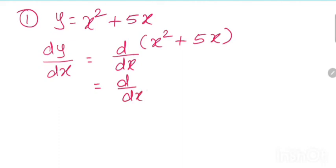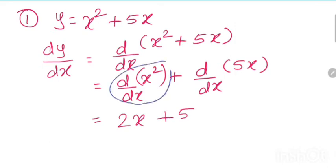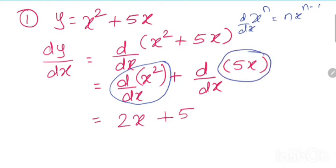Here we need to find the derivative of x square first, and then of phi of x. The derivative of x square will be 2x. For phi of x, the derivative will be phi of x. We used the formula x raise to n, derivative is n x raise to n minus 1. For phi of x, the derivative of x gives 1, so the result is 2x plus phi of x.